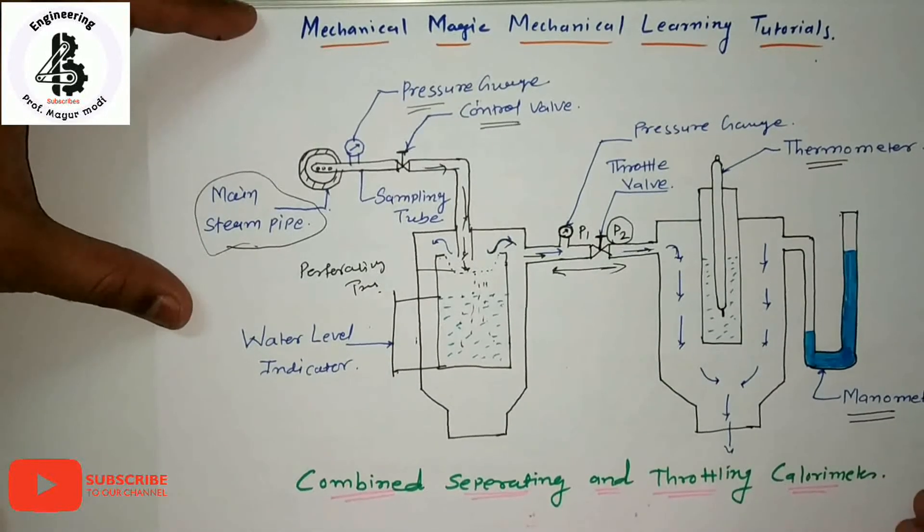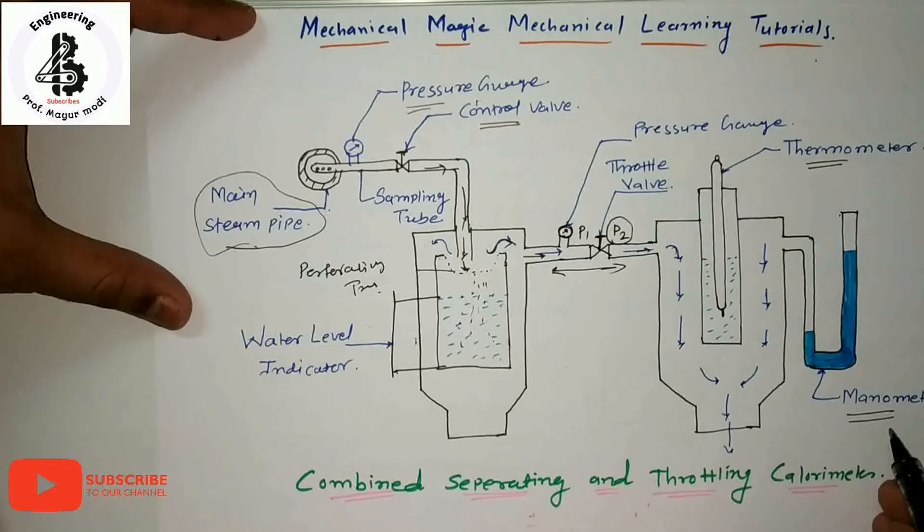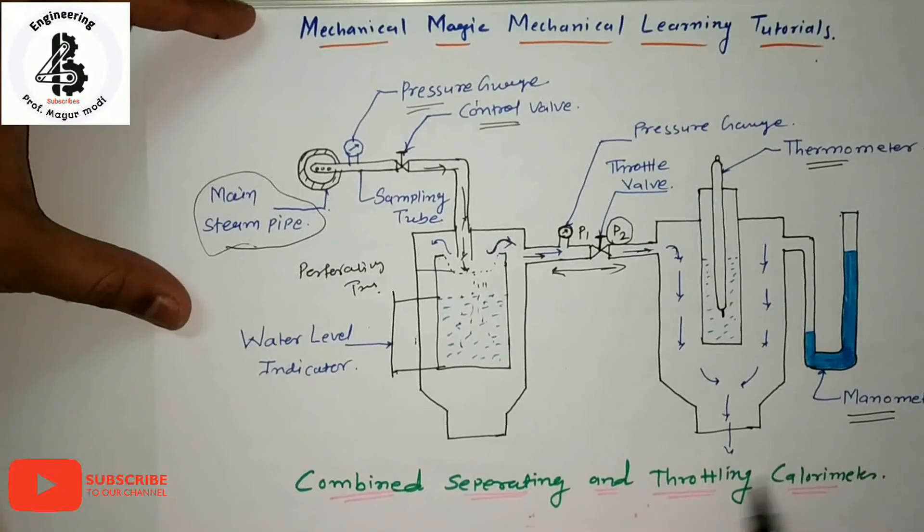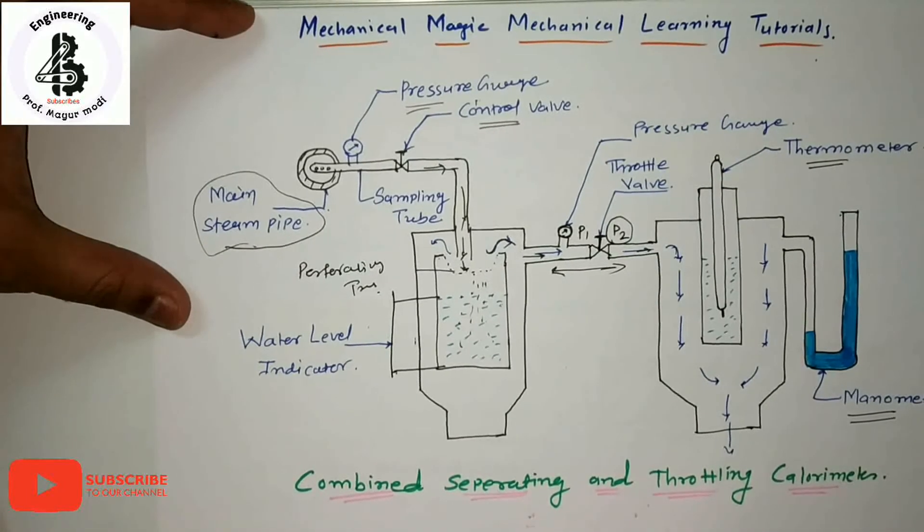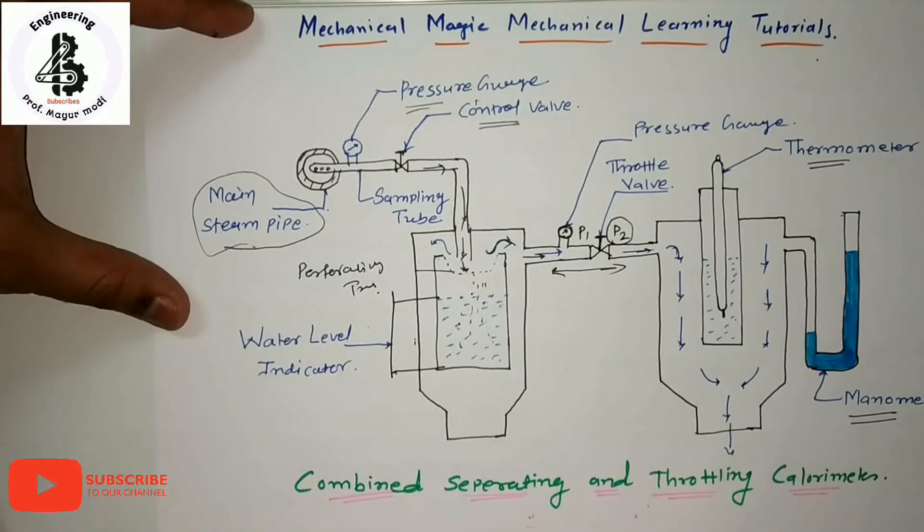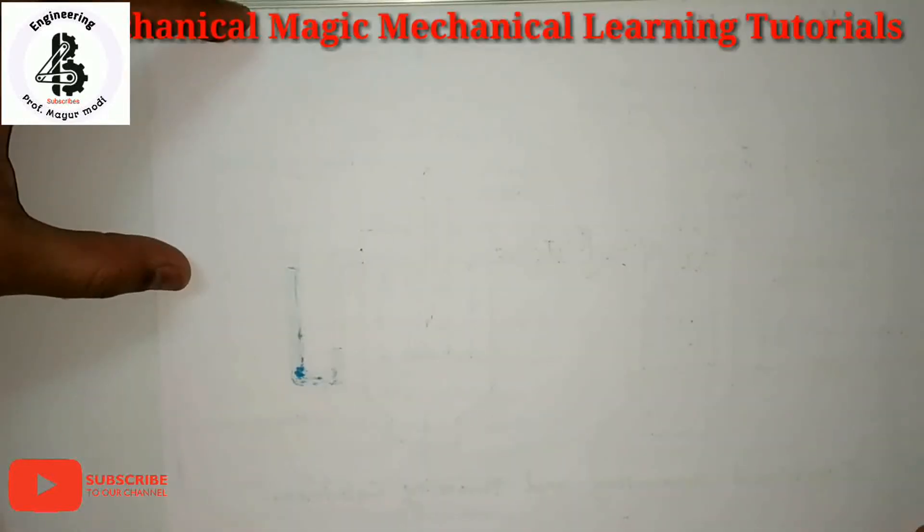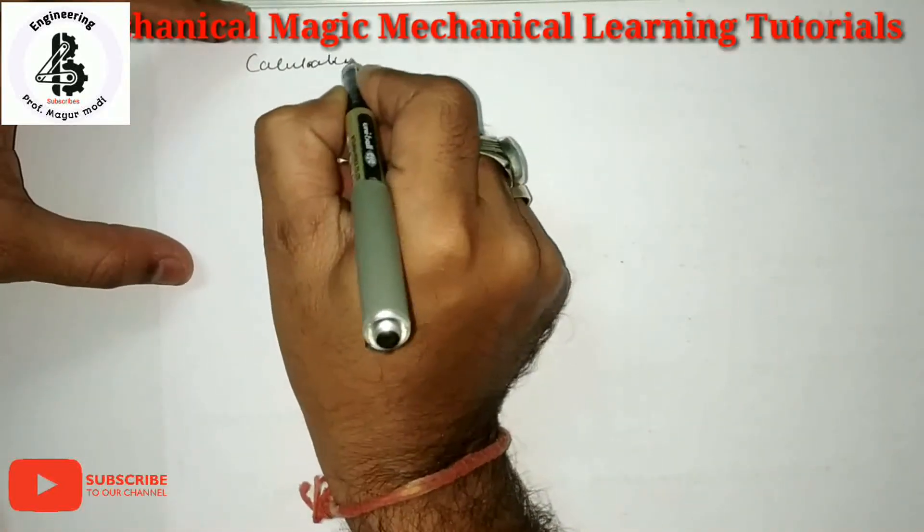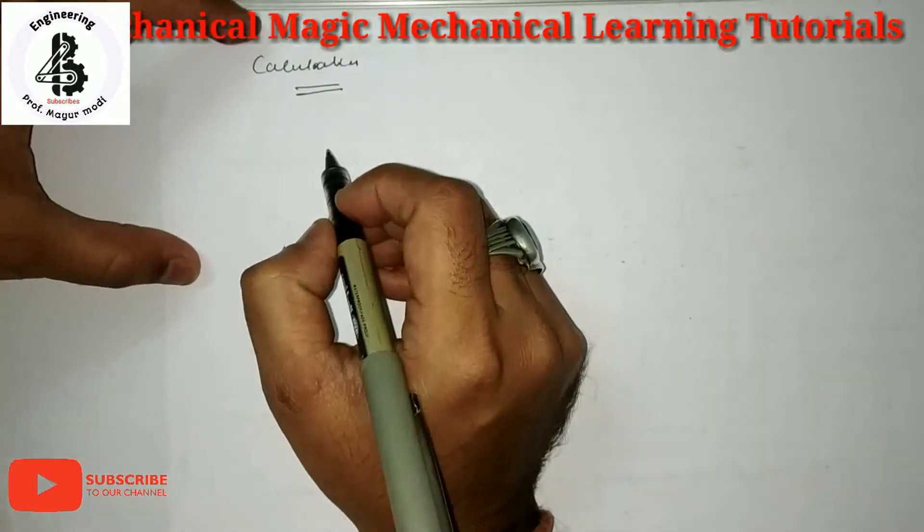In that case, the combination effect of both the separating calorimeter and throttling calorimeter. Now for the calculations, dryness fraction is being measured with the help of combined separating and throttling calorimeters.